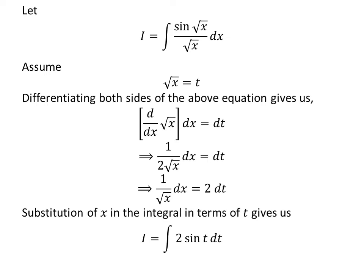Substitution of square root of x by our assumed value t and 1 upon square root of x times differential of x by 2 times differential of t in the integral I gives us I is equal to integral of 2 times sin of t with respect to t.